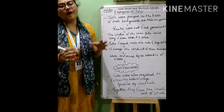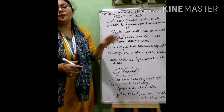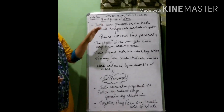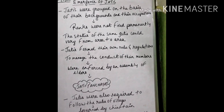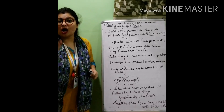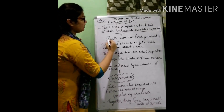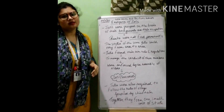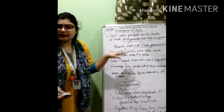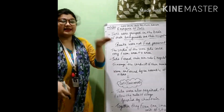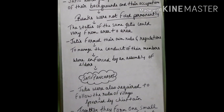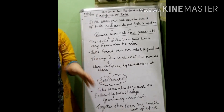In the passage of time, when differentiation among this group of people became more and more and their economic and social status changed, these jatis were further grouped on the basis of their backgrounds and occupation. But their ranks were not permanently fixed, because their ranks might change — today they are poor, in future they might be rich, and then their status will change. As a result, ranks were not fixed permanently. The status of the same jati could also vary from area to area.